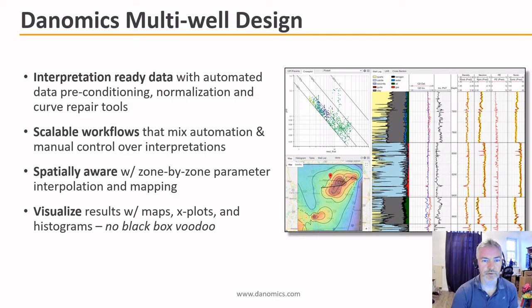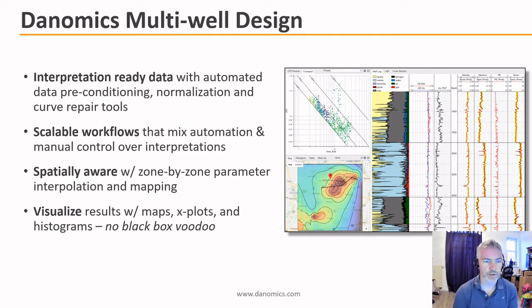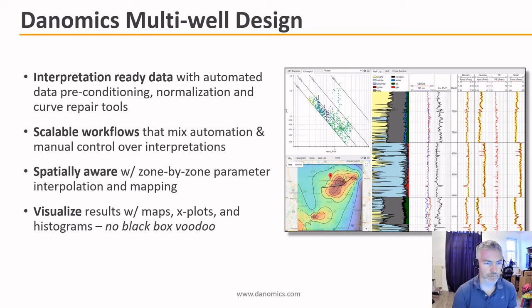We view being natively multi-well as being extremely important. What does natively multi-well mean? It means more than just being fast. It means that we get all of your data ready to be interpreted without you having to spend hours fretting over units or curve names. It means giving you a combination of automation and manual control over your interpretation so that you can turn your data into knowledge. It means being spatially aware, so you can pull data in from maps or interpolate parameters from other spatial databases. What it doesn't mean is being a black box — we give you the ability to visualize and interact with your data with maps, cross plots, log plots, and cross sections.